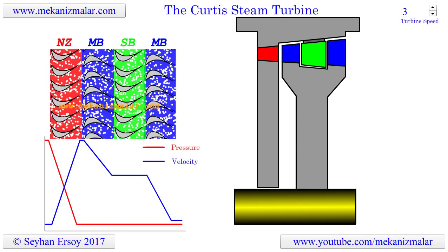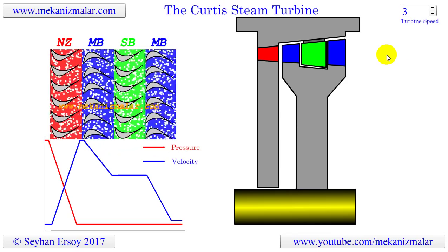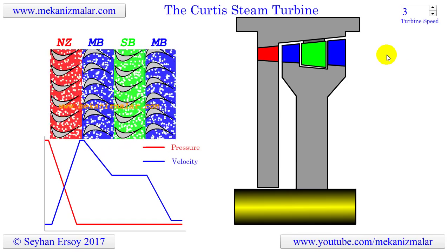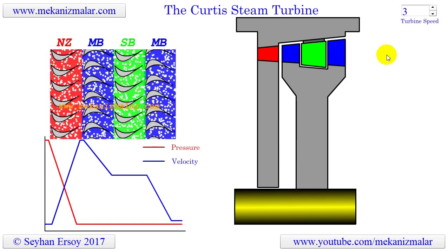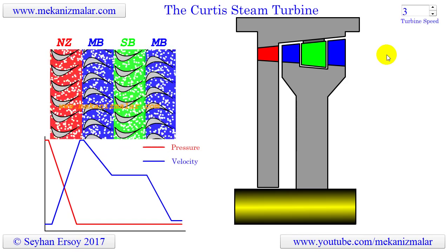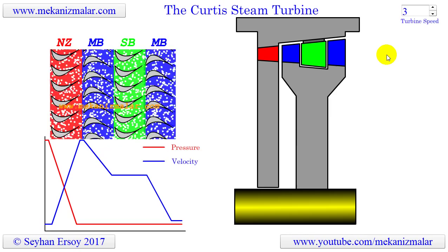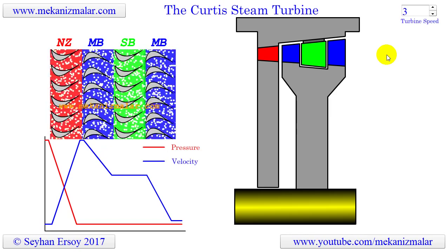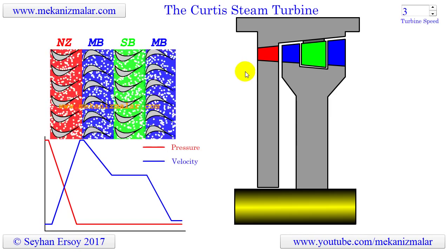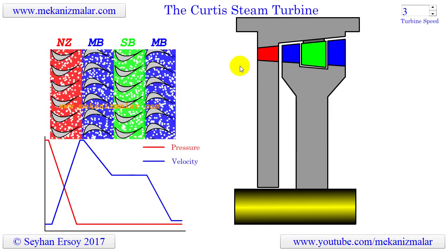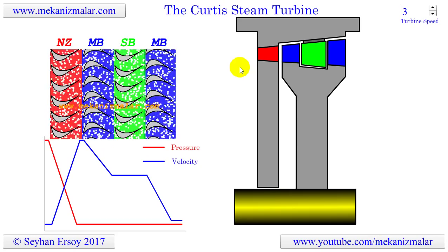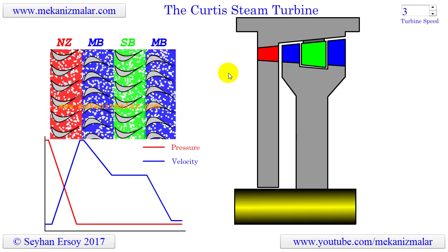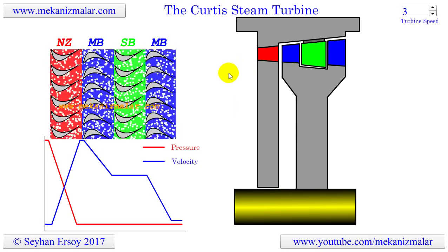Welcome to the video tutorials of Mechanisms by Meccanis Mahler. There are two major steam turbine types: action and reaction turbines. The Curtis steam turbine we are going to discuss here is an action type turbine.